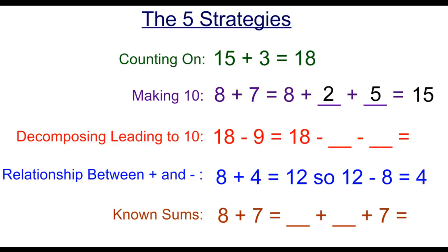Next is decomposing leading to 10. With subtraction, we want to subtract a number so that we can get to 10, making our next subtraction problem easier. In this case, we'll decompose our 9 into be 8 and 1. 18 minus 8 gets us to 10, subtracting another 1 takes us to the value of 9.